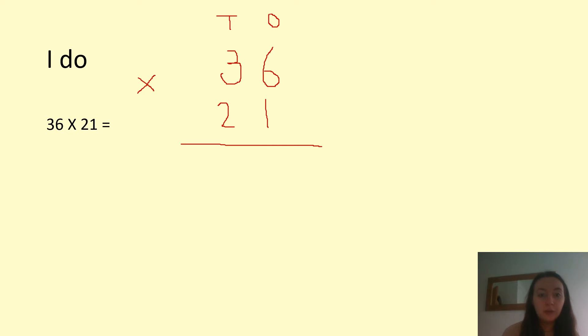So for long multiplication, we set things up like this. We've got 36 times 21, hence why we've got the T at the top to represent the tens column and the O to represent the ones column. Now, to start this problem off, we're going to look to the one in 21 and multiply it by everything on the top row, starting from right, heading towards the left. So first we do one times six, which is six, and then we move across and do one times three, which is three.